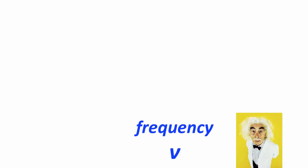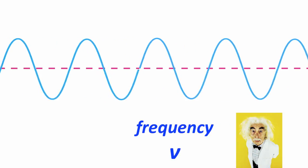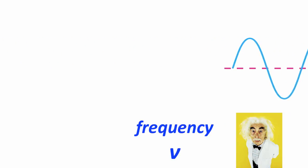Frequency is how many oscillations go past a given location, like this mad scientist here, in a second. Here's a wave coming by — one, two, three, four, five, six. So six oscillations went by in that amount of time. Normally we count how many oscillations go by per second.